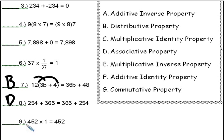And our last one, number 9, we have 452 times 1, and we get 452 when we multiply by 1. That's called the, I have to say this again real slowly, multiplicative identity property, which is letter C.